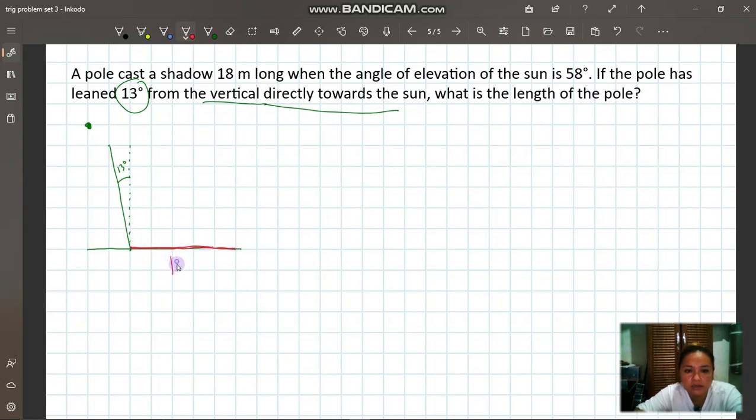So what is the length of the pole? The shadow of the pole is 18 meters. So of course, if the sun is here, the shadow of the pole is over here. This is 18 meters. The angle of elevation towards the sun, so let me draw it, something like that. The angle of elevation above the line of sight, from the point of view of the observer, the view to the sun is 58 degrees.